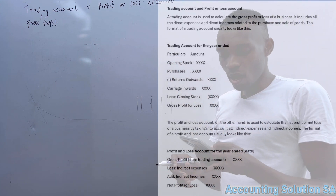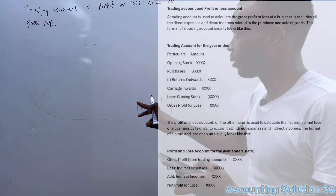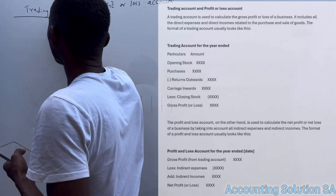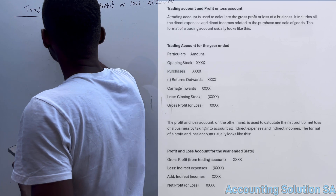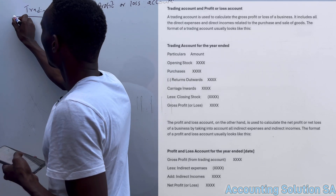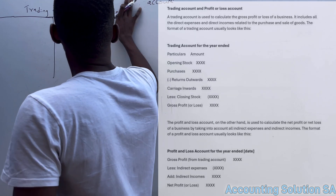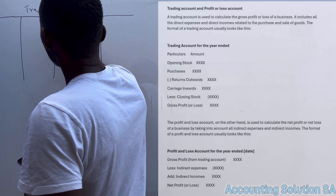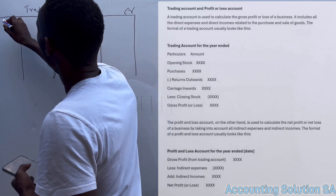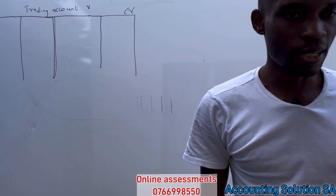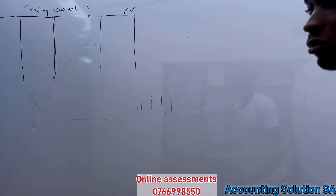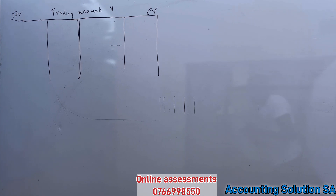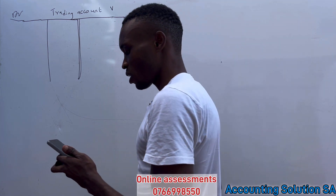Now let's do an example of these two accounts. We can do it in the form of a T-account, which is also fine. We're going to have a debit side as well as a credit side. Let me move the camera a bit so that you will be able to see. Now let's draft the format of the trading account as you can see on the screen.